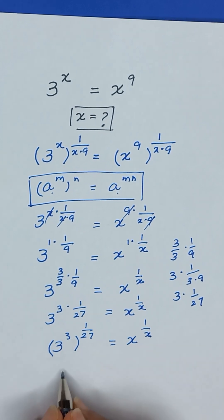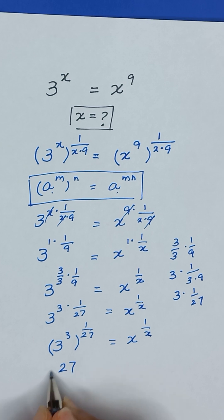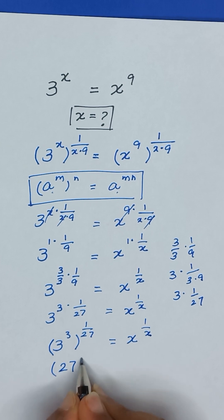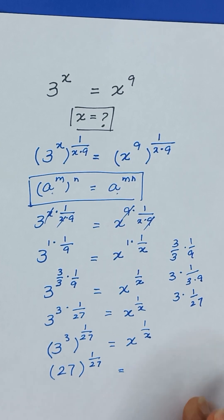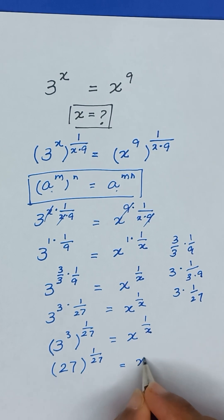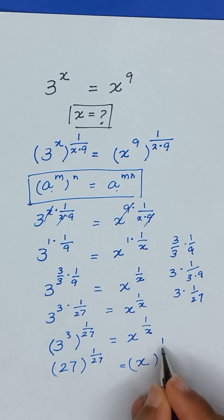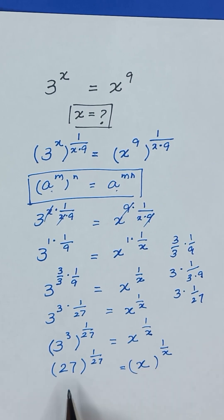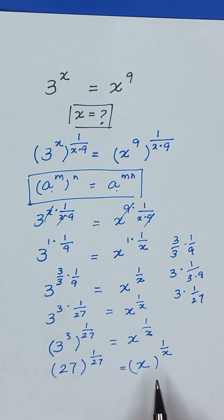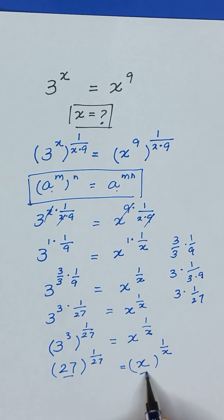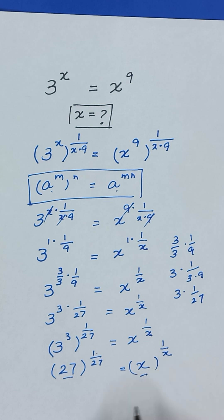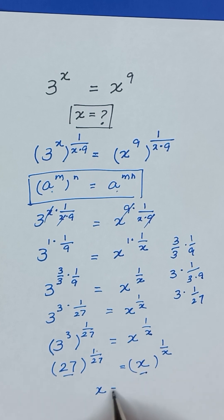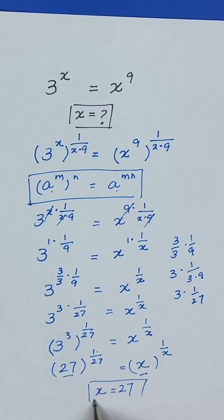Now, 3 to the power 3 is the same as 27. So it will become 27 to the power 1 divided by 27, equal to x to the power 1 divided by x. If we compare both sides, 27 is equal to x, and 1 divided by 27 is equal to 1 divided by x. That means the value of x is equal to 27.